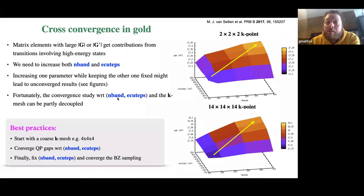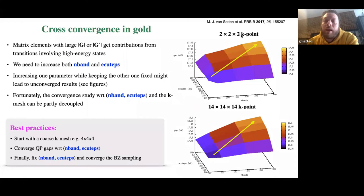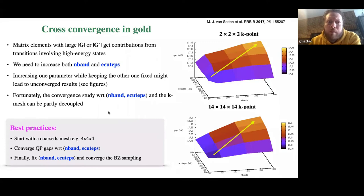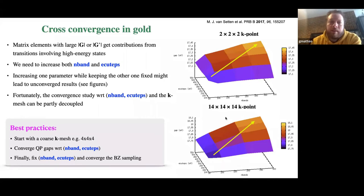Fortunately, convergence with respect to NBAND and ECUT_EPS is partially decoupled from convergence with respect to Brillouin zone sampling. You can use a reasonably coarse k-mesh to converge the cross-convergence study, and once you find good values for NBAND and ECUT_EPS, fix these parameters and start increasing the k-point sampling. Note that roughly speaking, GW calculations scale with the number of k-points in the full Brillouin zone squared, so it's very important to perform this convergence study with a relatively coarse k-mesh before moving to something much denser.